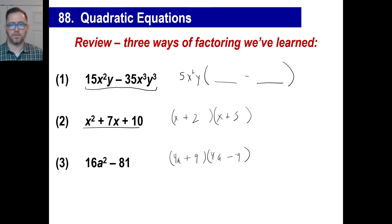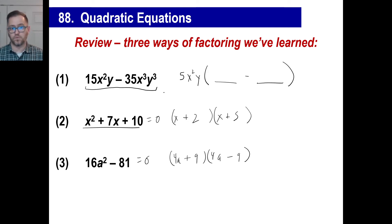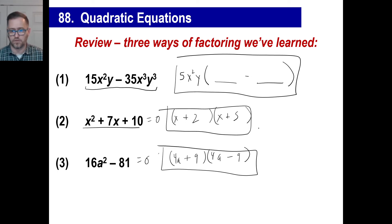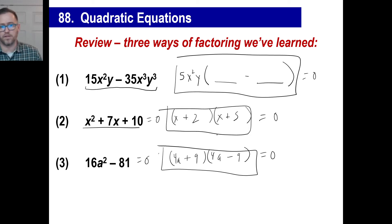All we're going to do is throw an equal zero at the end of these. Then we'll solve. In other words, we're going to do more than just factor. Now we're going to actually go like this and have this equals zero, this equals zero, this equals zero. We can actually figure out, since it's an equation, we can solve the thing instead of just factoring it. So let's take a look at an example.